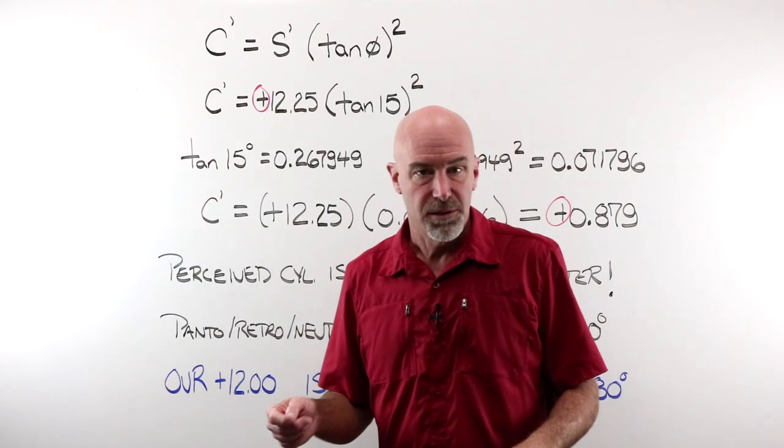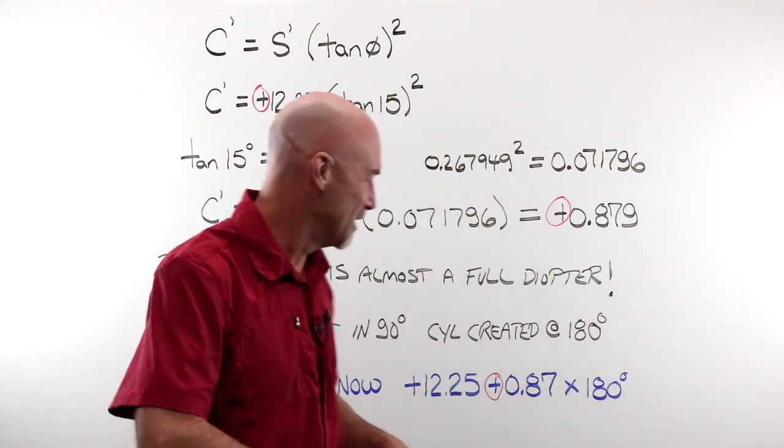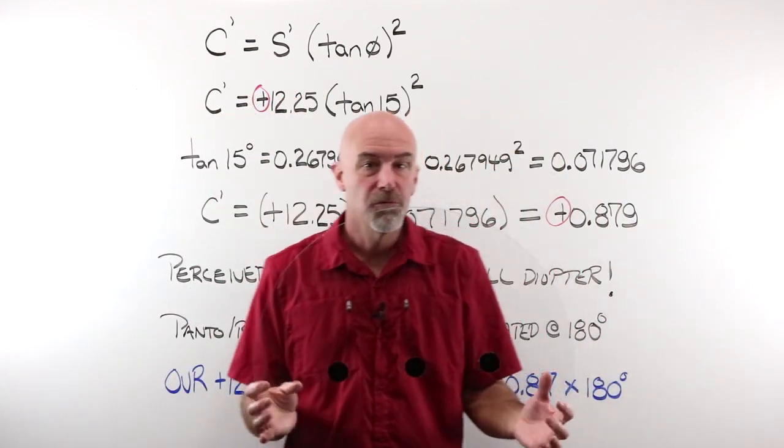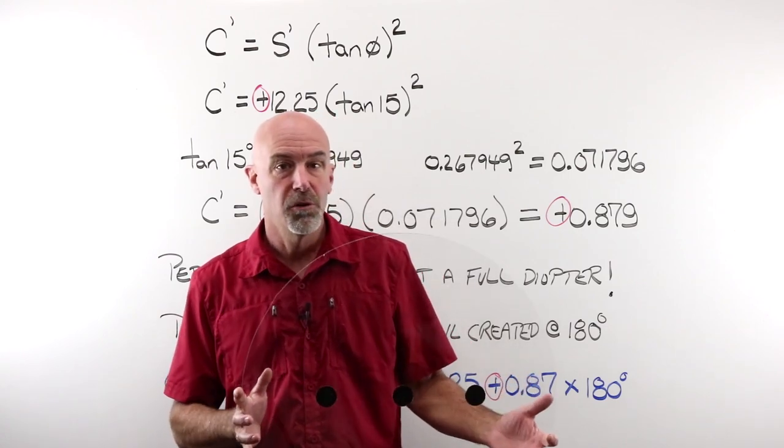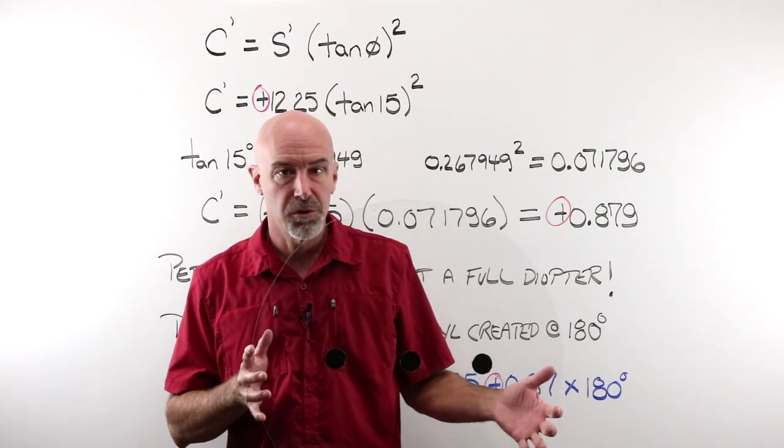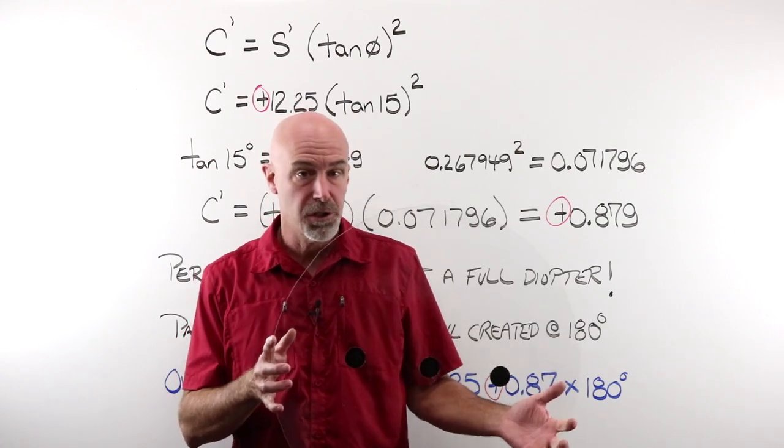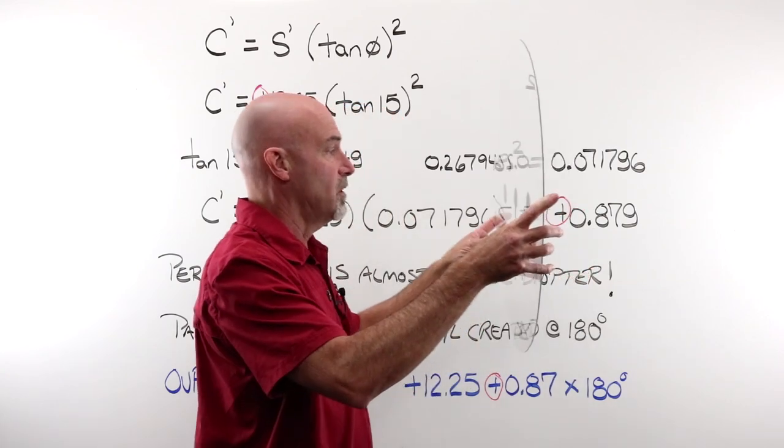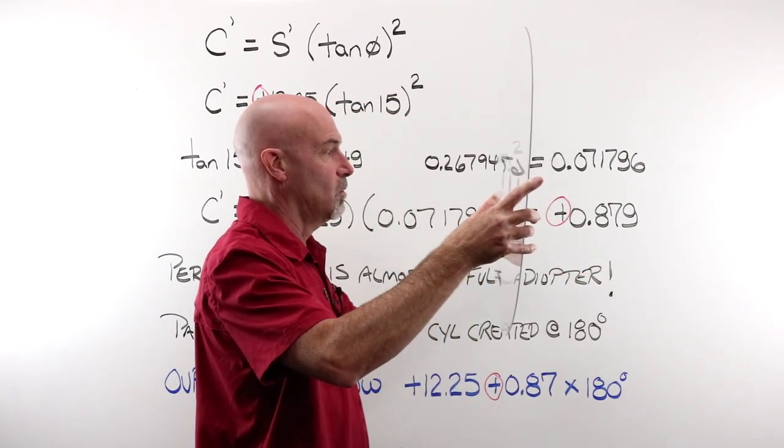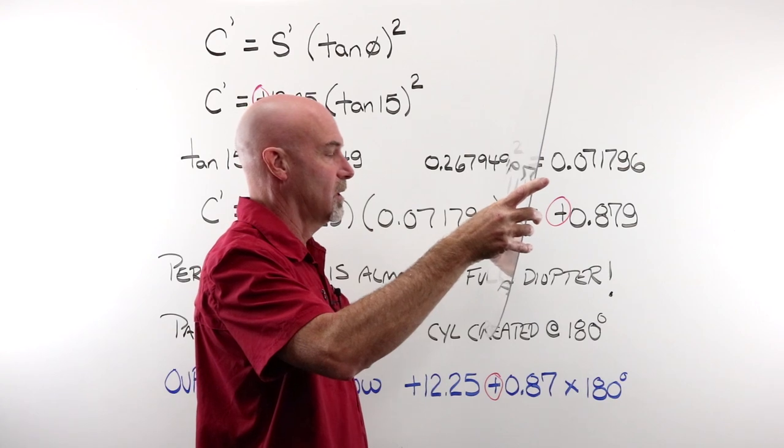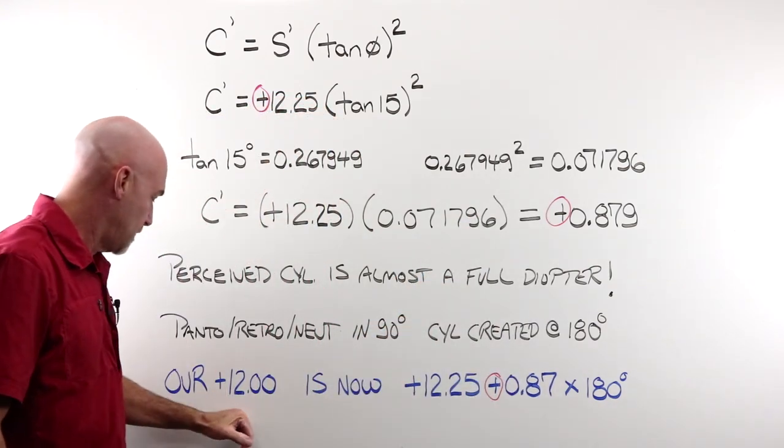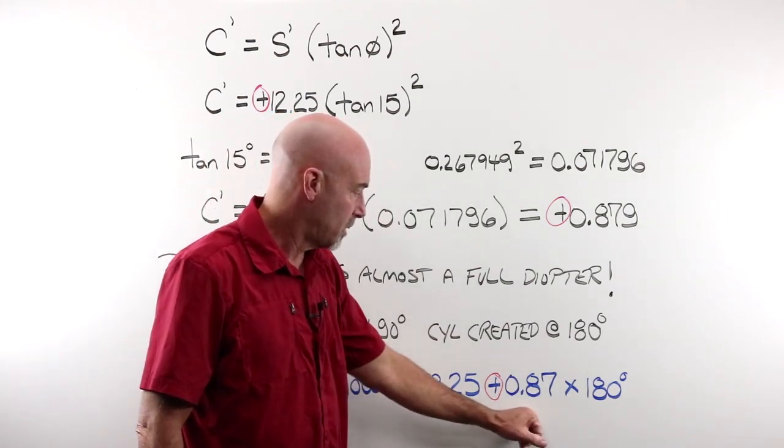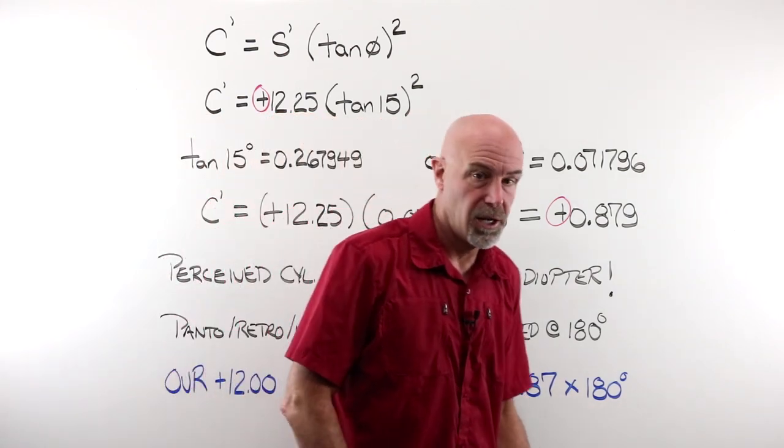What I do want you to take away from this, and this is really the whole point of this lesson, is we take a very, very simple plus 12 spherical lens. No bells, no whistles, no coatings, not aspheric, nothing special about it, it's not free form. I place it in front of my eye, and all I did was tilt that lens 15 degrees. That's it. And I went from the plus 12 to a plus 12.25, plus 0.87, at 180 degrees.